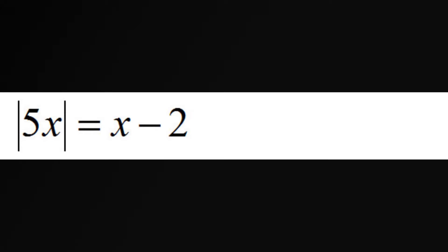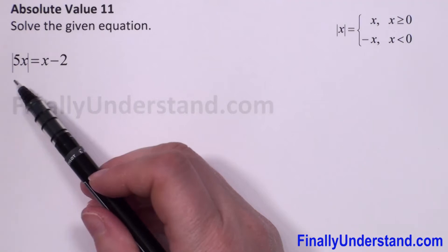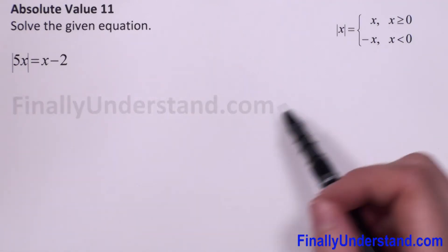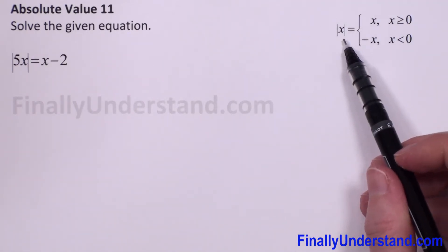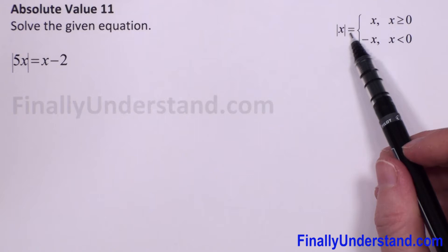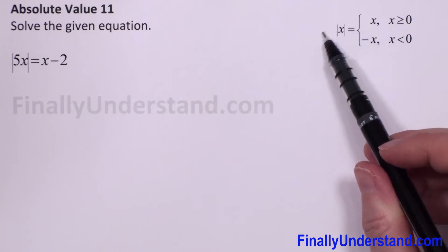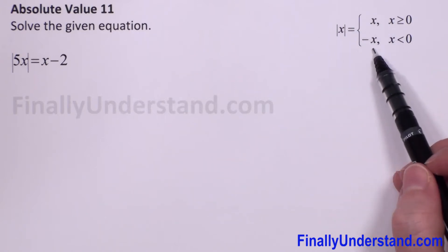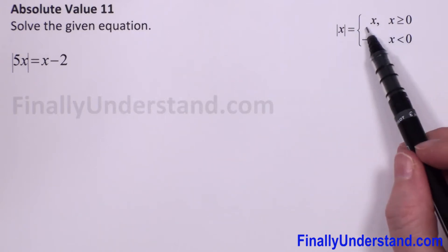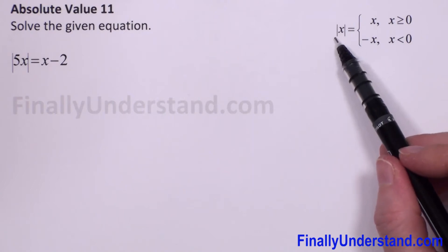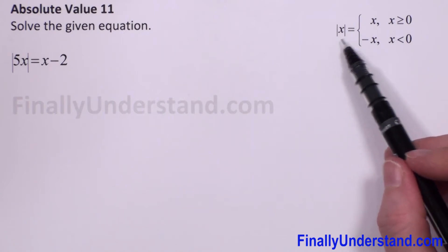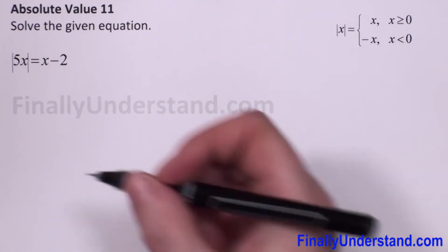Let's see our next example. We have an equation with absolute value, so we have to go to our definition of absolute value. We have to split our absolute value into two cases. First, when the expression between the absolute value bars is positive or zero.